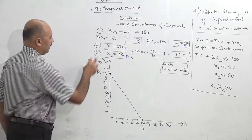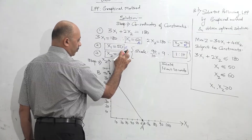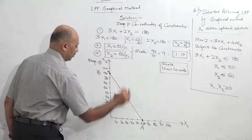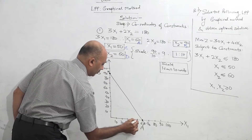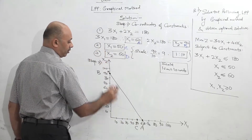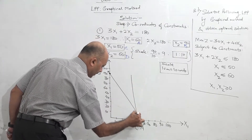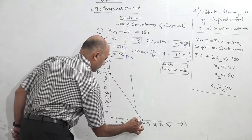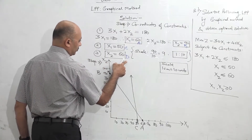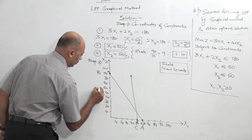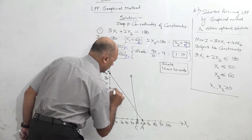This is the line which represents constraint number 1. For the second constraint, there is only one point — that is point C, x1 equal to 50. When there is a single coordinate, the line will be a parallel line, so this line goes like this as a parallel line. Third constraint: x2 equal to 60, that is point D. Again, single coordinate, so it will also be a parallel line going like this.